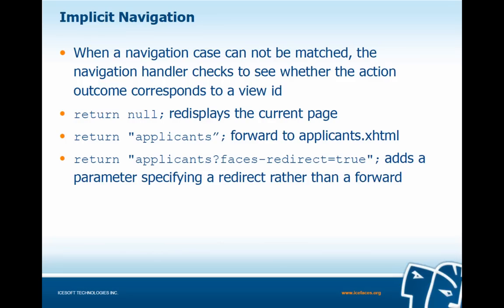For implicit navigation, when a navigation case cannot be matched, the navigation handler checks whether the action outcome corresponds to a view ID. If we return null, that means re-display the current page. If we return 'applicants', as in our addApplicant method, we forward to applicants.xhtml. If we return 'applicants' followed by faces-redirect=true, we perform a redirect rather than a forward. A forward takes place entirely on the server, whereas a redirect sends a command to the browser to fetch a new URL and recreate the view.